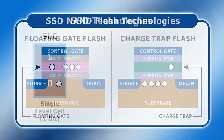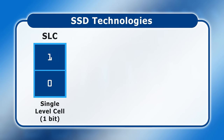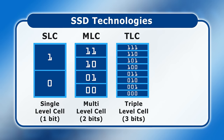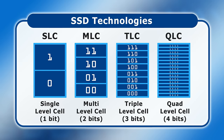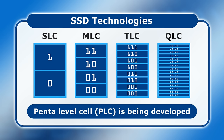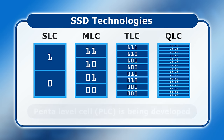Initially, all SSDs stored just one bit of data per cell, which we now refer to as single-level cell, or SLC. However, to scale up capacities for a reasonable cost, multi-level cell, or MLC SSDs were developed, followed by triple-level cell (TLC) and quad-level cell (QLC). These store more bits per memory cell by distinguishing additional states between fully programmed and fully erased. However, as the cell wears out and electrons stray, it's more difficult to distinguish these extra states, which means that the cells can endure fewer PE cycles.